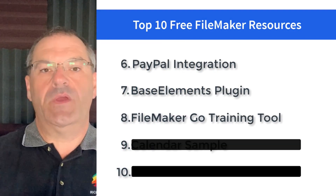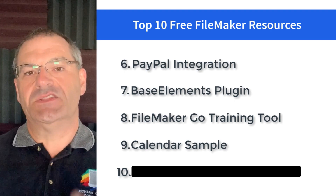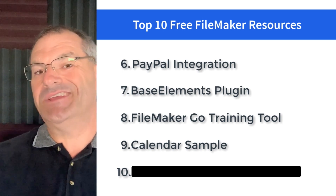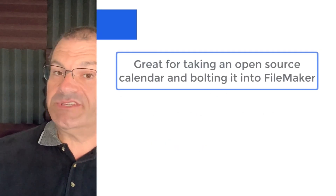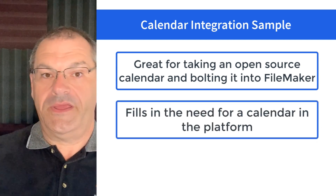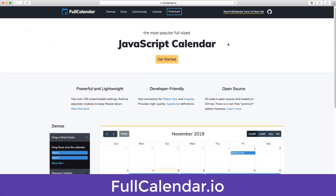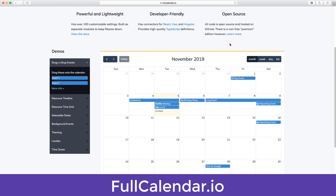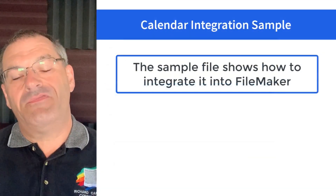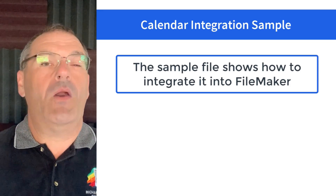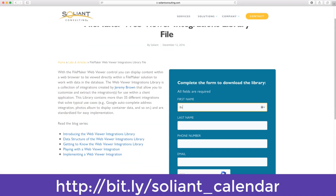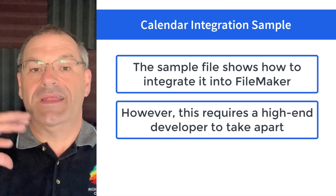Number nine on our list is a calendar integration sample. It was originally created by a developer at Soliant. This solution was built a couple years back, but it helps you understand how to take a JavaScript or web-based open-source calendar and bolt it into FileMaker. The FileMaker platform by itself doesn't really have a calendar, so there's an open-source calendar system called FullCalendar.io — a web-based calendar. The trick is how to make it work in FileMaker, and that sample file at Soliant shows us how to do it. You can put your information in and get the sample file, though it's really designed for high-end developers to take apart.